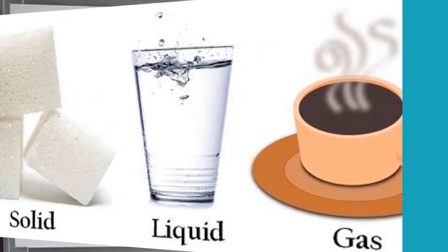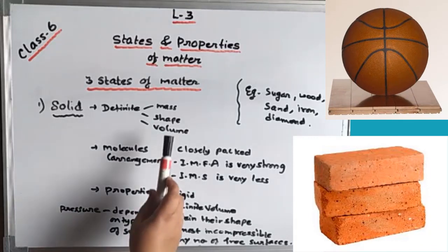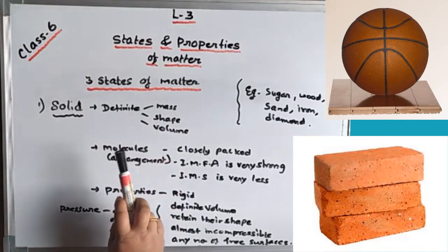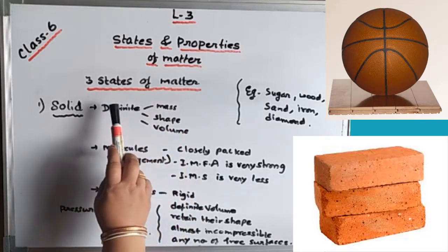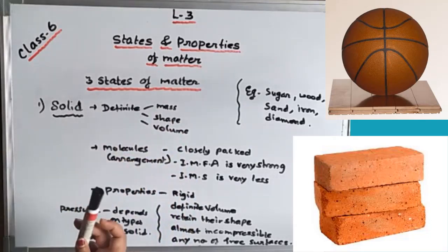First we will discuss in detail about solid. Solid has a definite mass, definite shape, and definite volume. What is the meaning of definite? Definite means fixed — it is not going to change.